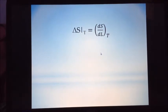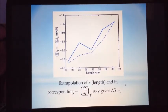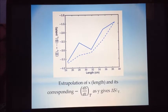The entropy of the system is described as ds over dl at constant temperature. In order to get entropy, delta s, we plot ds over dl at constant temperature against their corresponding constant length. Plotting, extrapolating of x, the length, and its corresponding negative ds over dl as the y gives you the entropy of the system, which is the slope in this.